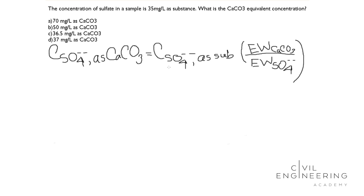Now let's solve the problem. We know the concentration of sulphate is 35 mg per liter. Now we need the equivalent weight of calcium carbonate divided by the equivalent weight of sulphate.